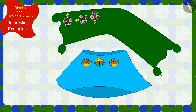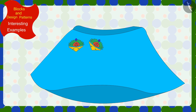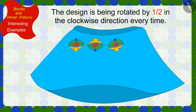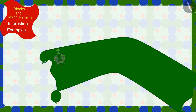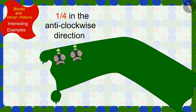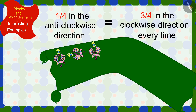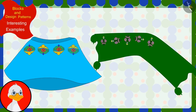Find the solution for this with your friends. In the pattern on the skirt, the design is being rotated by half in the clockwise direction every time. And in the pattern made on the dupatta, the design is being rotated by a quarter in the anti-clockwise direction, or three-fourths in the clockwise direction, every time.